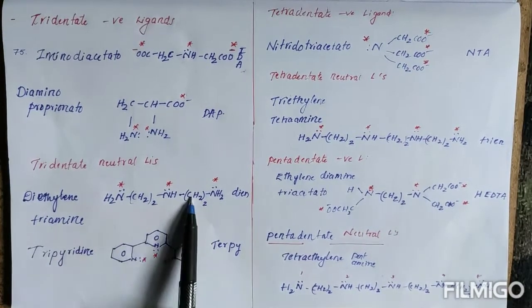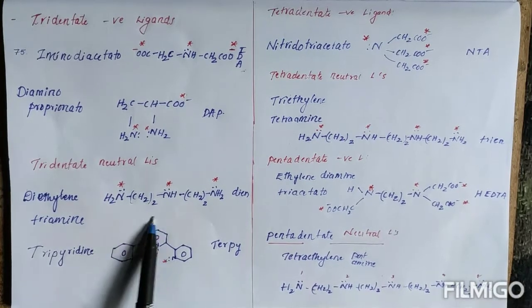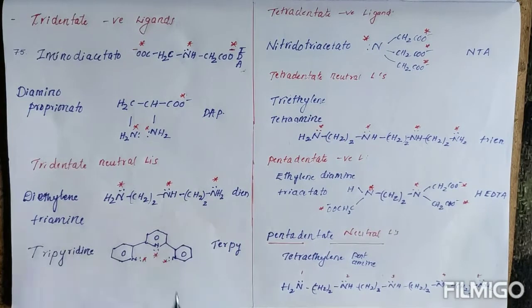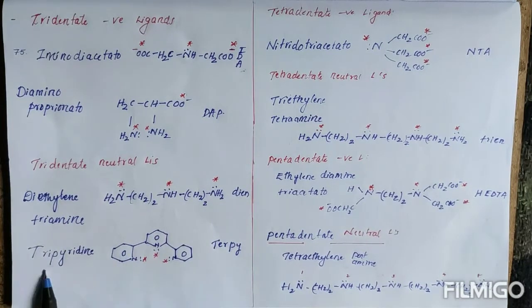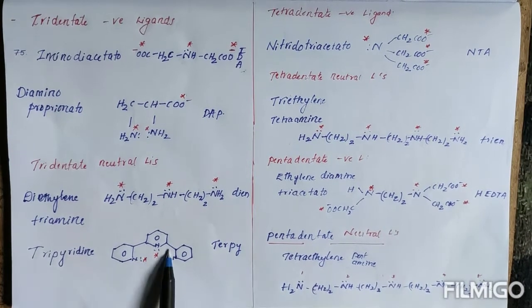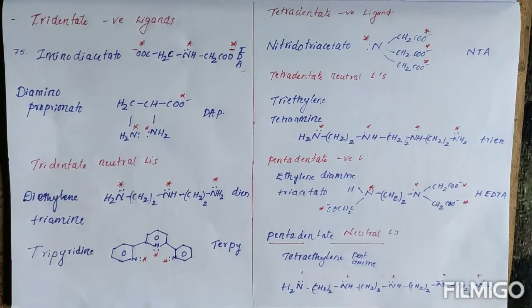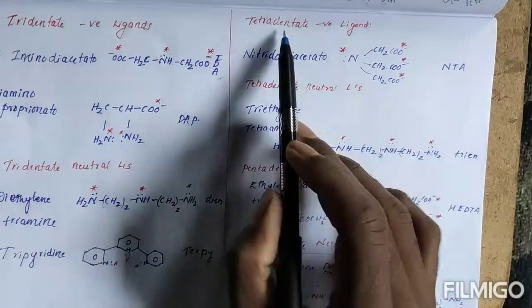This is diethylene. I have represented it CH2 twice, so it is ethylene, right? Diethylene, one, two, three triamine. It is tripyridine. We can see that donor atom is nitrogen here, so it can be represented as terpene. Tetradentate negative ligands.